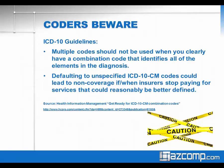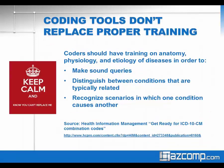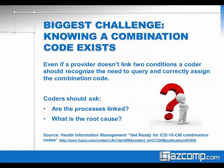This is a reminder that you really shouldn't rely on coding tools alone to replace proper training. There are lots of courses available for coding specific to your specialties — you can start with roadtoicd10.org that CMS has available. Coders should have training on anatomy, physiology, and etiology of diseases in order to make sound queries, find the right code, distinguish between related conditions, and recognize scenarios where one condition might cause another manifestation or symptom. One of the biggest challenges is knowing that a combination code even exists.